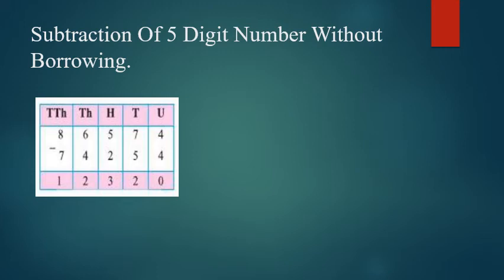First, units place: 4 and 4. 4 minus 4 is 0. Next, 10s place, we have 7 and 5. 7 minus 5, we get 2. In the 100s place, we have 5 and 2. 5 minus 2 is 3. 1000s place, we have 6 and 4. 6 minus 4 is 2. And in the 10,000s column, we have 8 and 7. 8 minus 7 is 1. So the answer is 12,320.